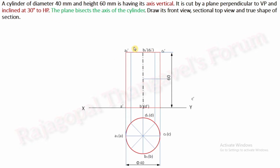Now we have to read the condition of the section plane. Keep it in mind: always draw the simple position in thin lines. I know the answer, so this entire circle is going to be visible — that's why I started with a thick line. As a student, you should always start your simple position as a thin line, unless you know the answer.